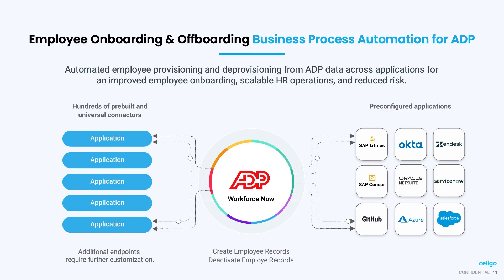Another example is the Employee Onboarding and Offboarding Business Process Automation that automatically provisions and deprovisions employees' accounts from multiple applications, so you can ensure new employees are productive as quickly as possible, while also eliminating risks when an employee leaves.